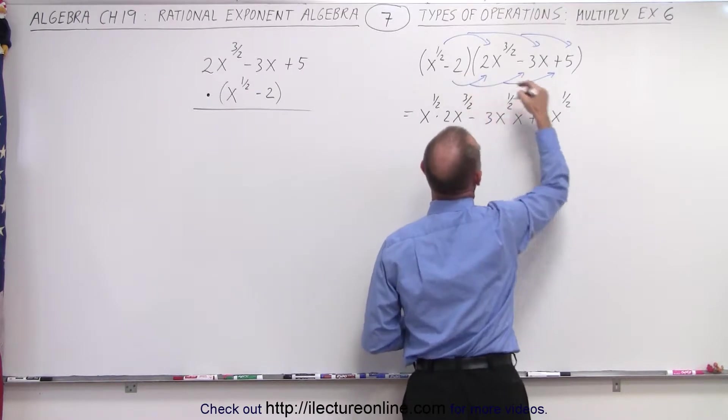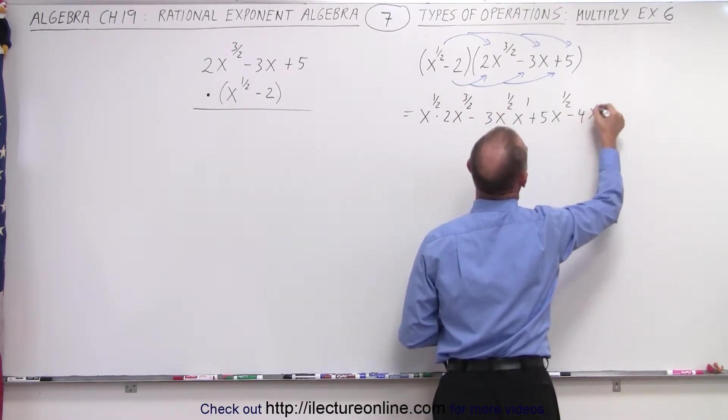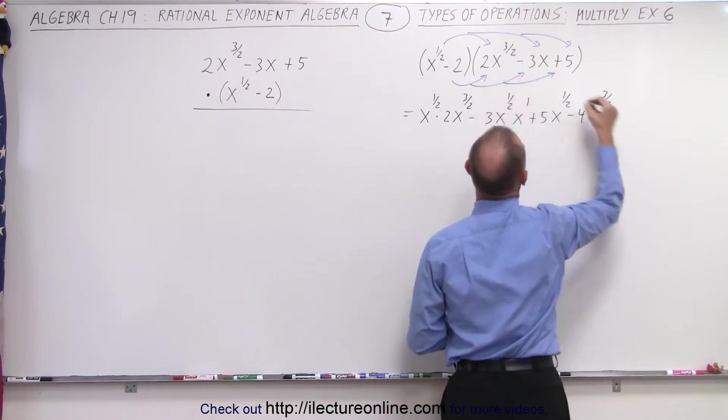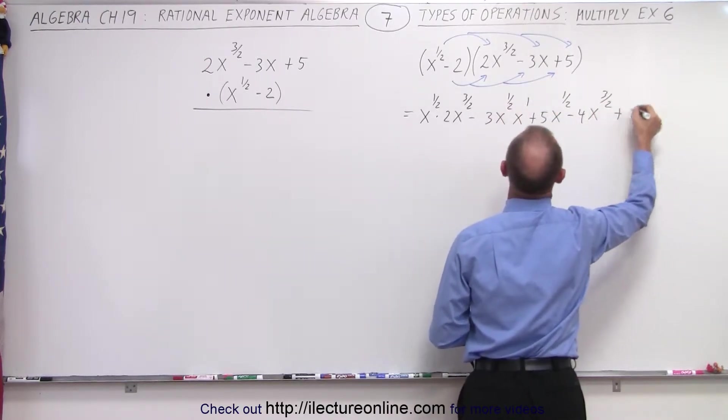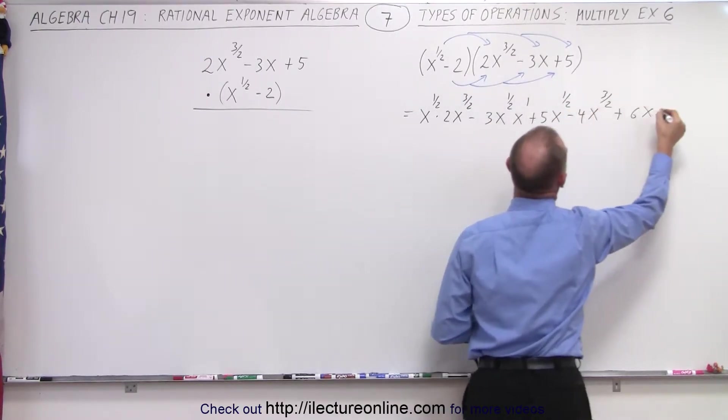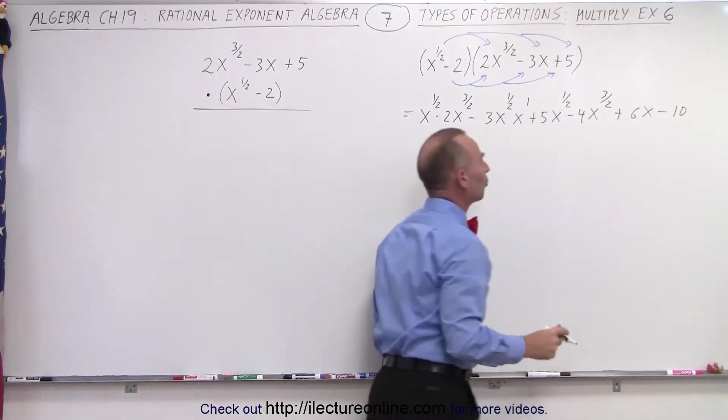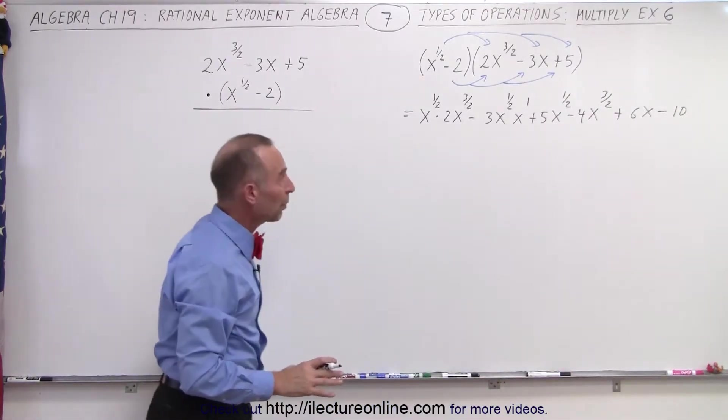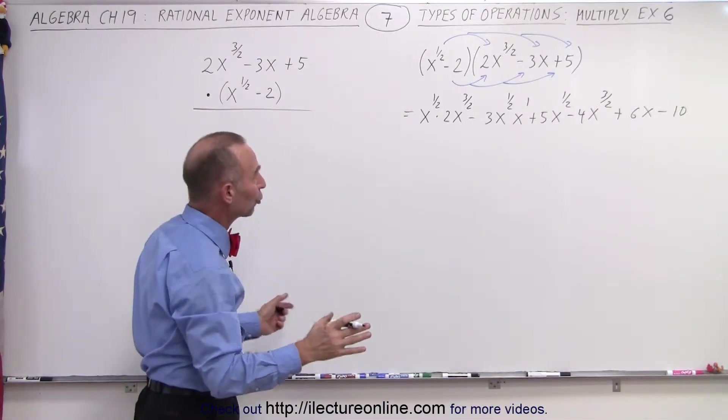Multiply this times this, we get minus 4x to the 3 halves. Multiply this times this, we get plus 6x. Multiply this times this, we get minus 10. And notice we do have six terms, and now we want to collect common terms.